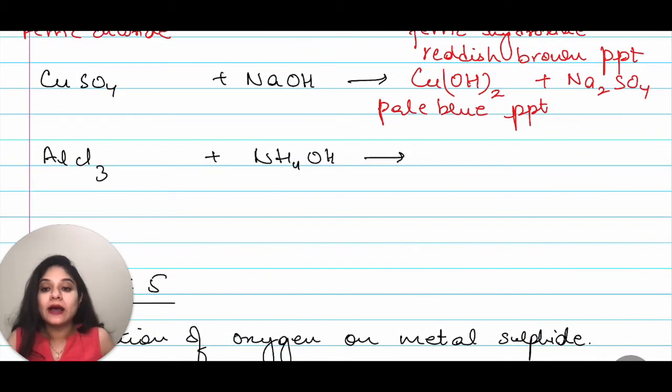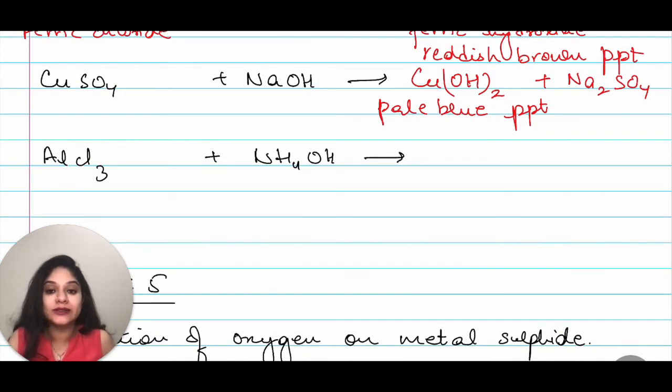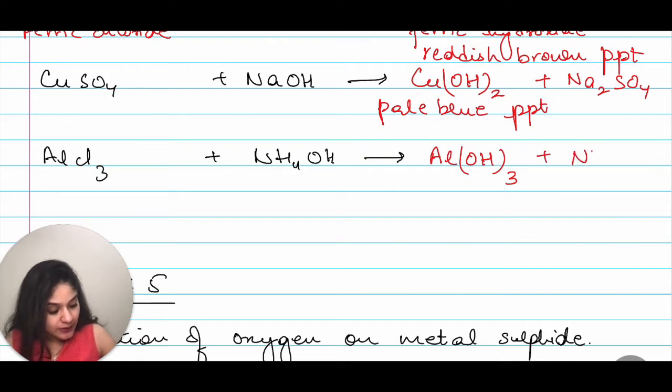Now, moving on I have aluminum AlCl3 plus NH4OH that will give me Al(OH)3 plus NH4Cl. So, this is the fourth method of preparation of bases.